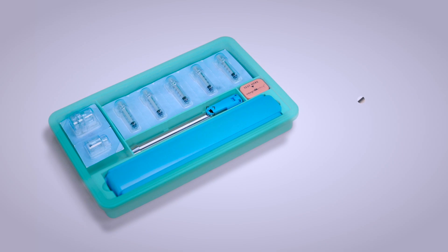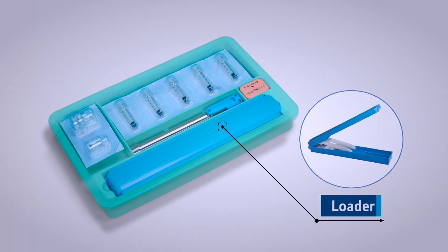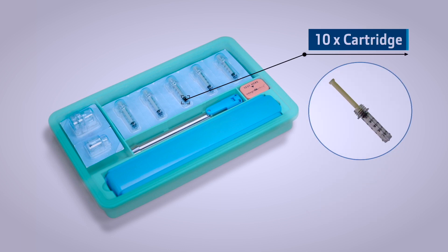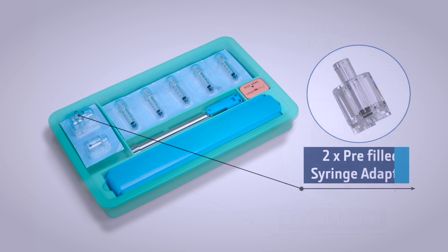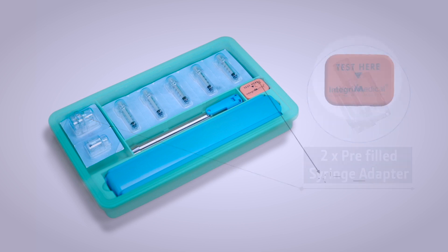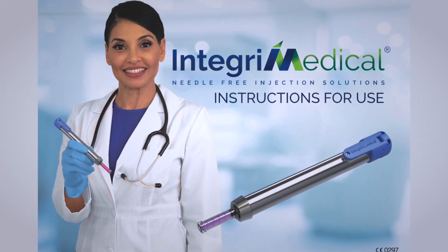It contains the NFIS device, a loader, disposable cartridges, vial adapters, pre-filled syringe adapters, a testing foam, and an instructions for use manual that has all the information included in this demo video.